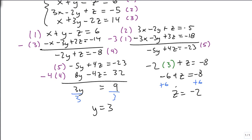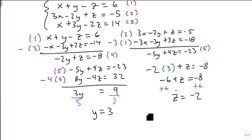To get x, we just pick our favorite equation. I like equation one the most. So x plus 3 minus minus 2 equals 6. So x plus 5 equals 6. So x is 1. And we get as our answer: 1, 3, minus 2.